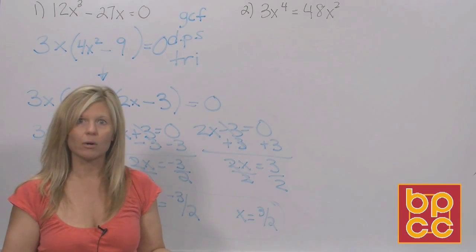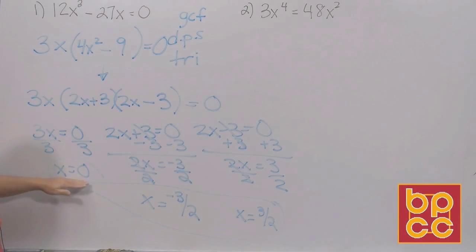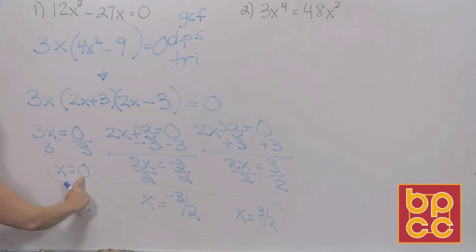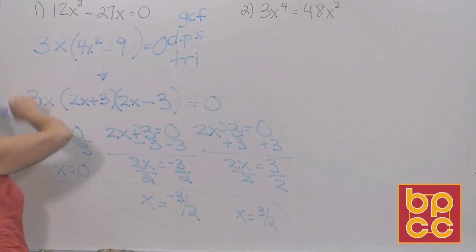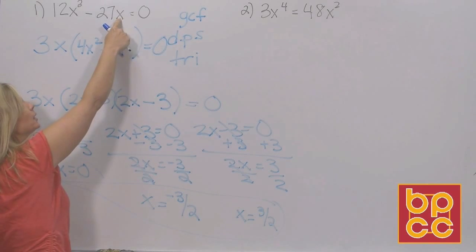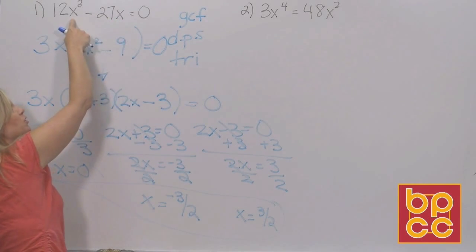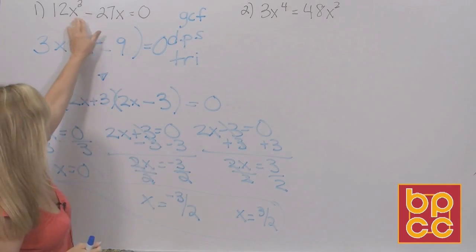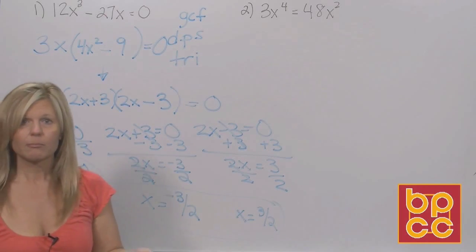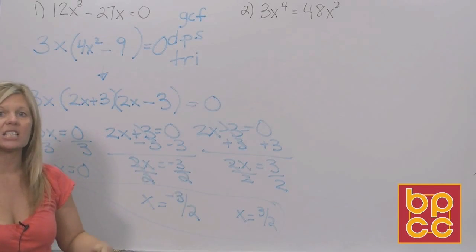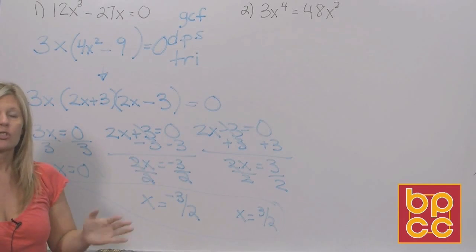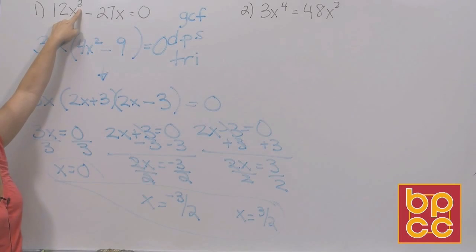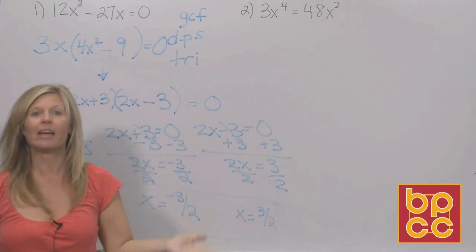We can check those solutions. When you substitute a value in, the equation should balance. For example, if x = 0: 12(0)³ = 0 and -27(0) = 0, so 0 - 0 = 0. The same is true with the fractions — they will check. The only way solutions would not check is if you made an error in your calculations. This is degree 3, so we should have three solutions: one, two, three. They all work.